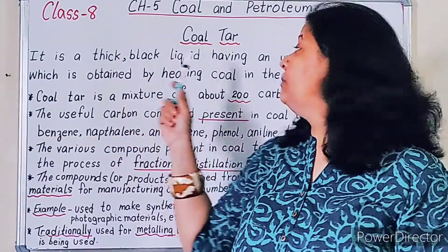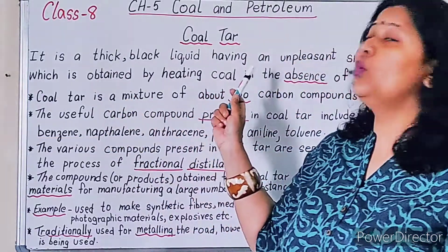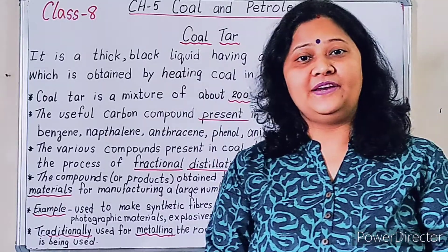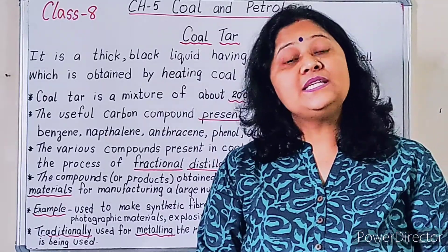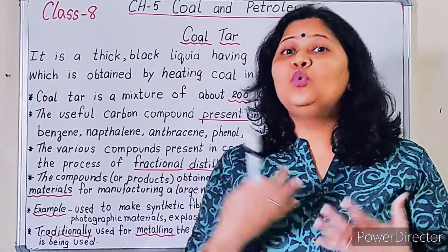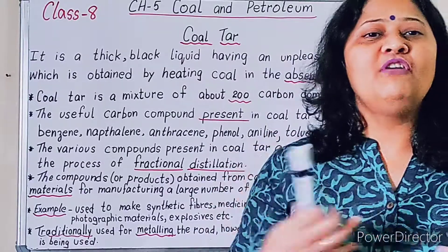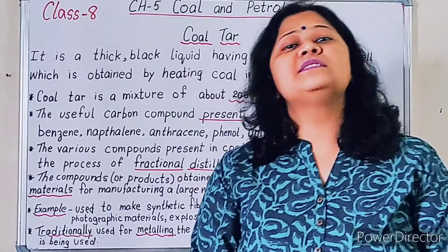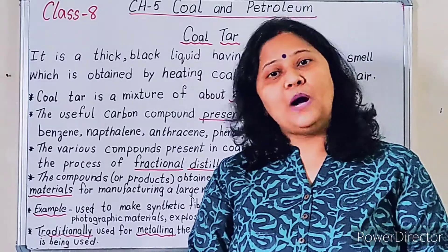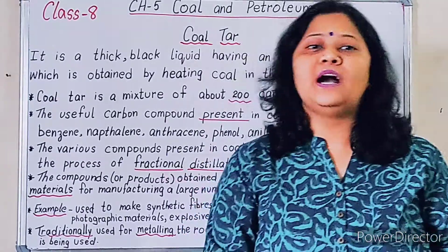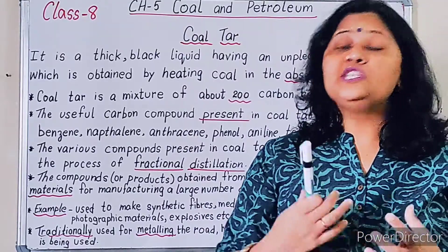It is obtained by heating coal in the absence of air. And this coal tar is a mixture of various carbon compounds — around 200 carbon compounds.